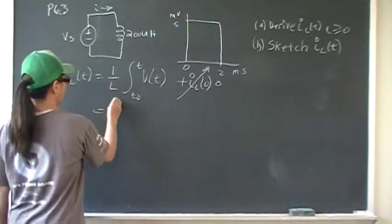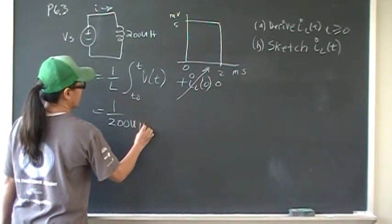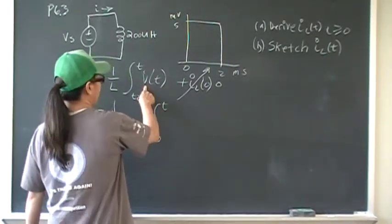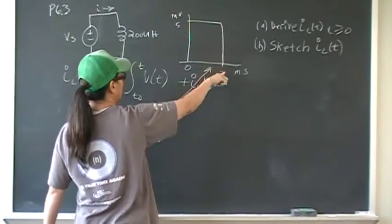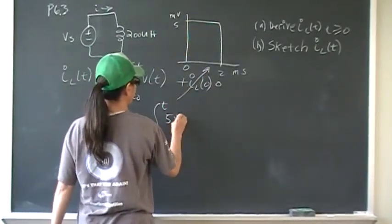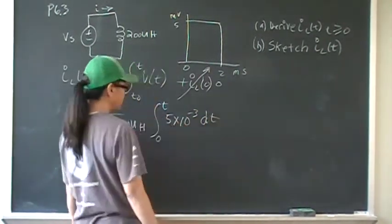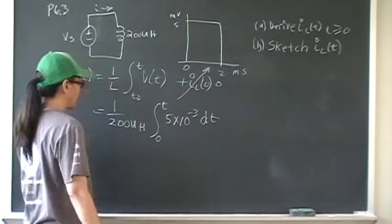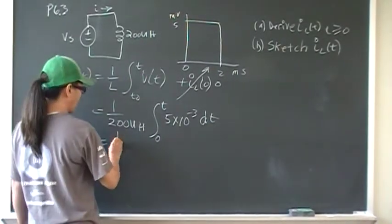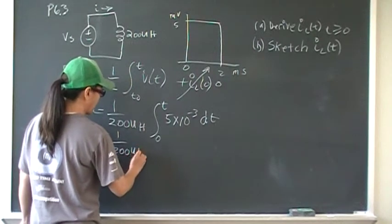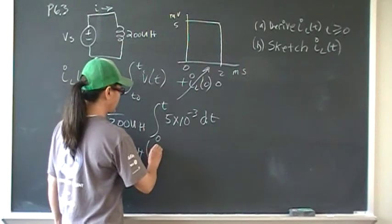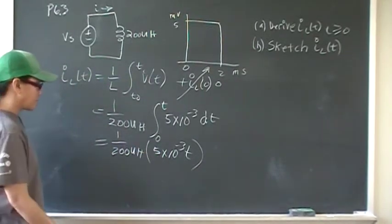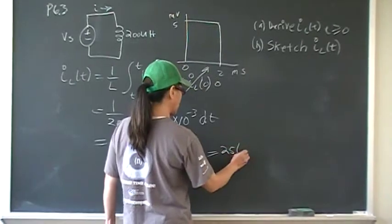So this becomes 1 over 200 microhenries, integrated from 0 to T, and the voltage from 0 to 2 milliseconds is 5 times 10 to the negative 3. Evaluating this, the 0 goes away, so it just becomes 1 over 200 microhenries times 5 times 10 to the minus 3 times T. The second part contributes 0.